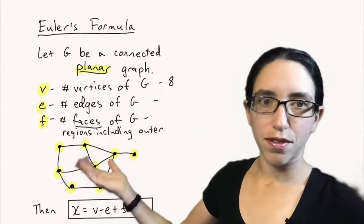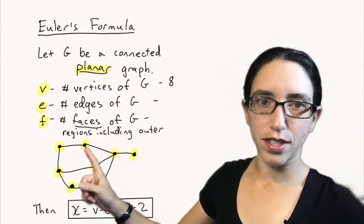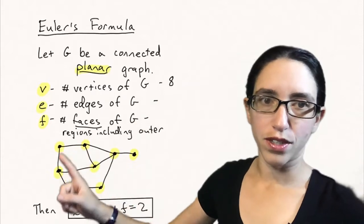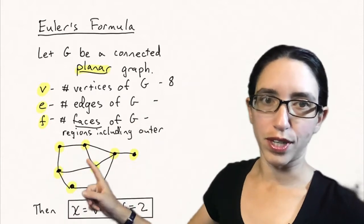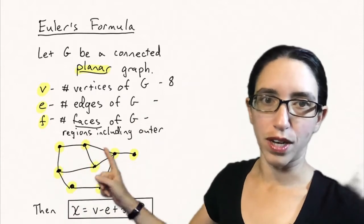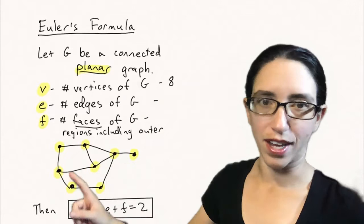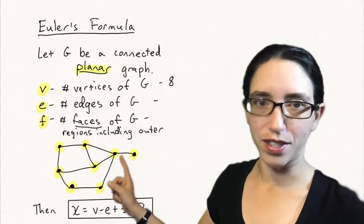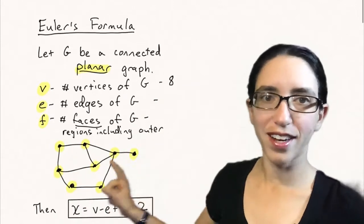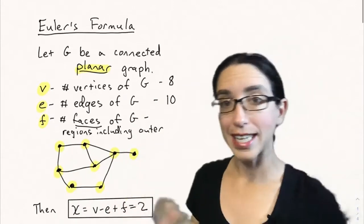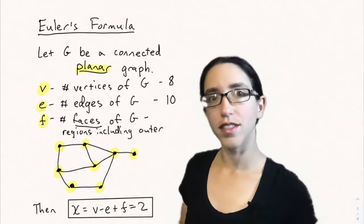In this graph the number of edges is one, two, three, four, five, six, seven, eight, nine, and then this one out here makes ten. So there are ten edges on G.